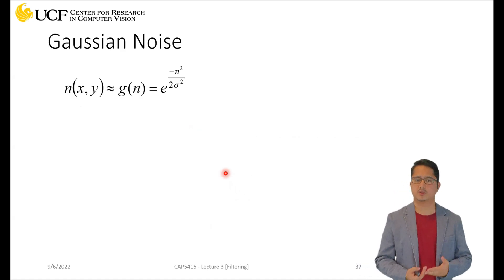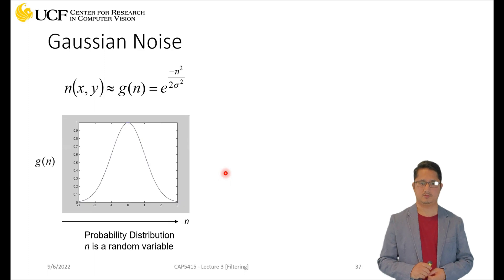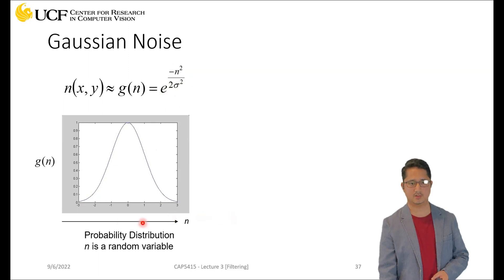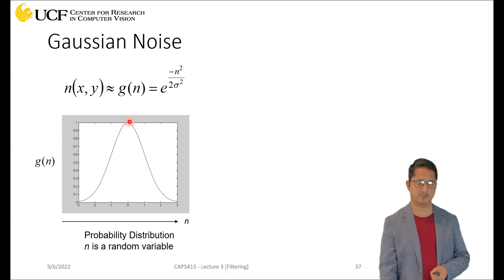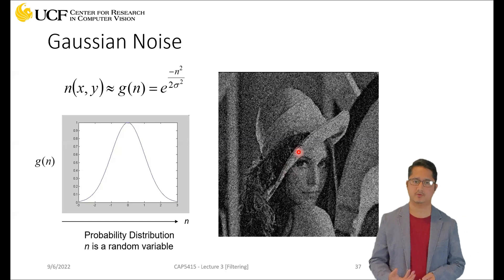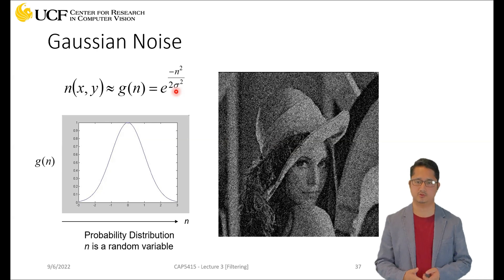The most common form of noise can be represented using a Gaussian function — we call this Gaussian noise. The Gaussian curve peaks at the mean, which is zero, and the equation gives values across the full range from negative to positive infinity. The most important parameter is the standard deviation of the Gaussian function, which defines what kind of noisy image you are going to observe. If you have Gaussian noise in an image, it might look something like the example shown.